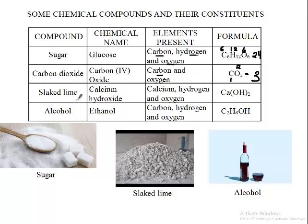Slaked lime is also another compound. Its chemical name is calcium hydroxide. It is made up of calcium, hydrogen, and oxygen. Calcium is one, we have one oxygen, and one hydrogen.